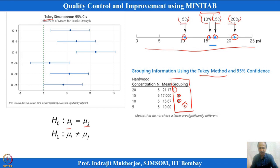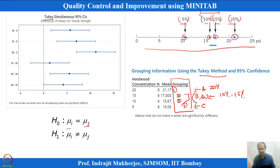The grouping results show: 20 percent gets letter code A, 10 and 15 percent both get letter code B, and 5 percent gets letter code C. Since A does not match B or C, 20 percent is statistically different from all other levels. Since B is shared by 10 and 15 percent, there is no significant difference between those two levels.